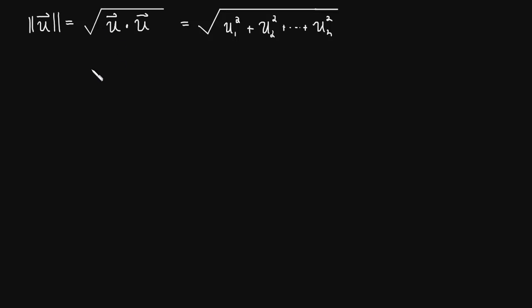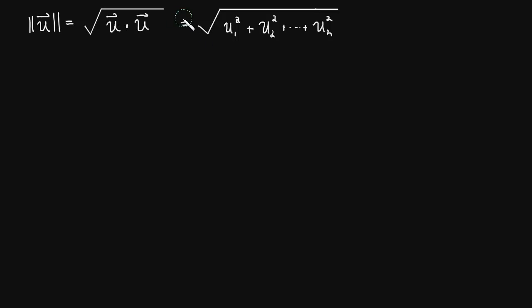We take each of the components, multiply them together, and add them up. We already said this is how we define the length of a vector — we did this in two dimensions using the Pythagorean theorem. In more dimensions, we just keep adding the squares of the components under the square root. So it makes sense that the square root of u dot u is the length of the vector.